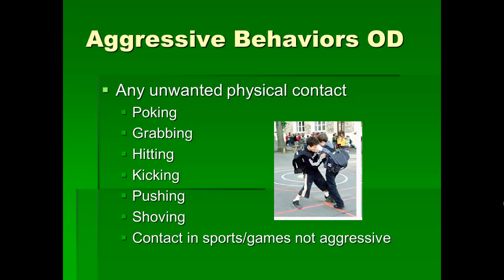Another operational definition is aggressive behaviors. In the experiment, we would say that any unwanted physical contact is an aggressive behavior. We'd give the observer very specific things to code: poking, grabbing, hitting, kicking, pushing, and shoving — all should be coded as an aggressive act. However, contact in a sports or game context is not aggressive, because when you play a game you give permission to be physically contacted. So that's not aggressive. Now that I've described this, you could take this and observe behaviors in the way I did in this hypothetical experiment.